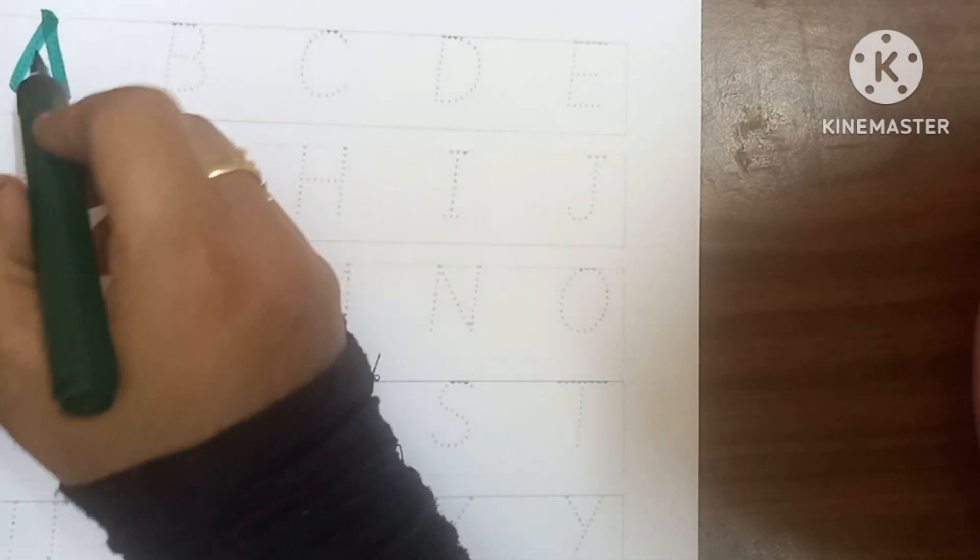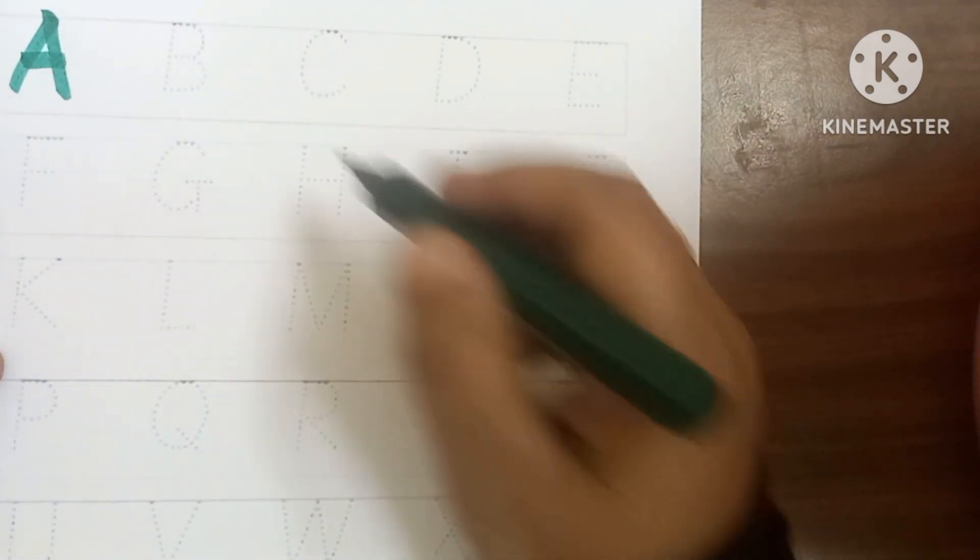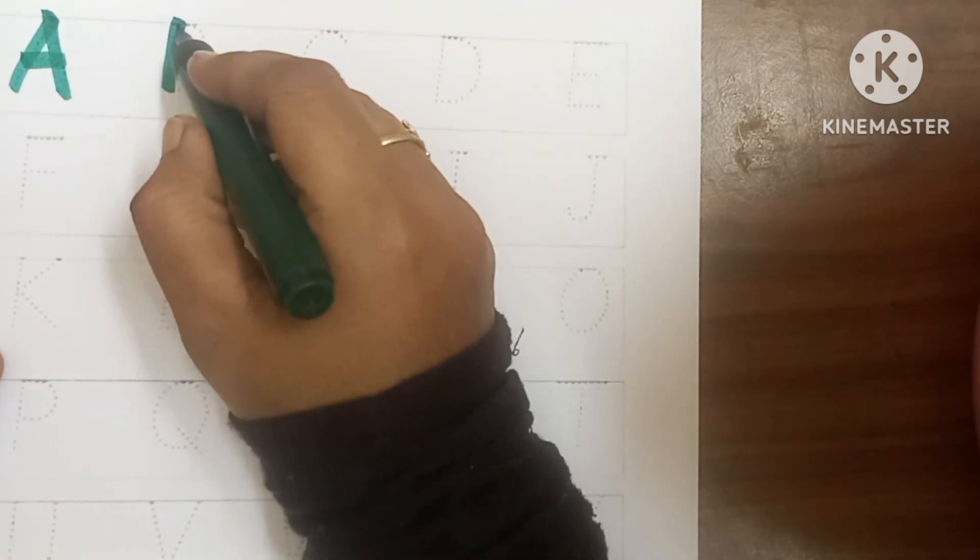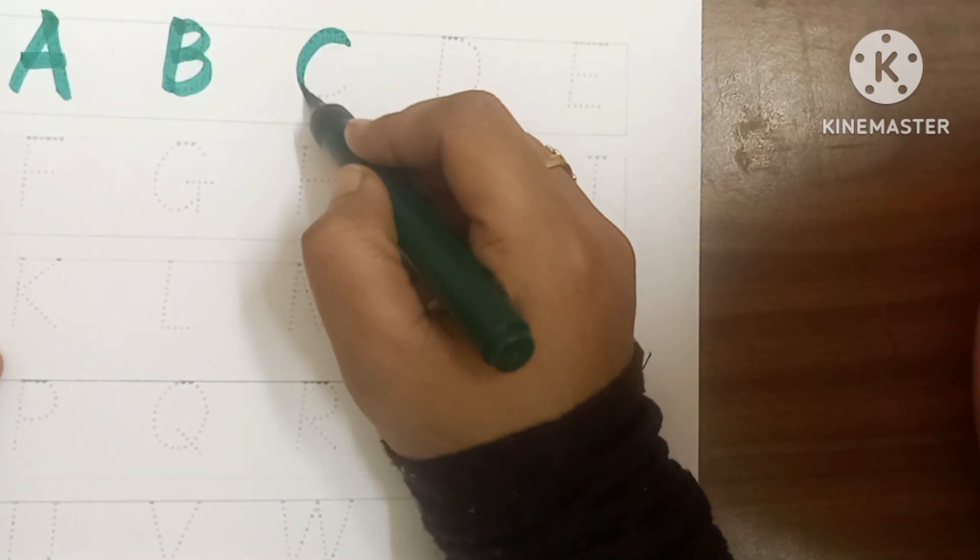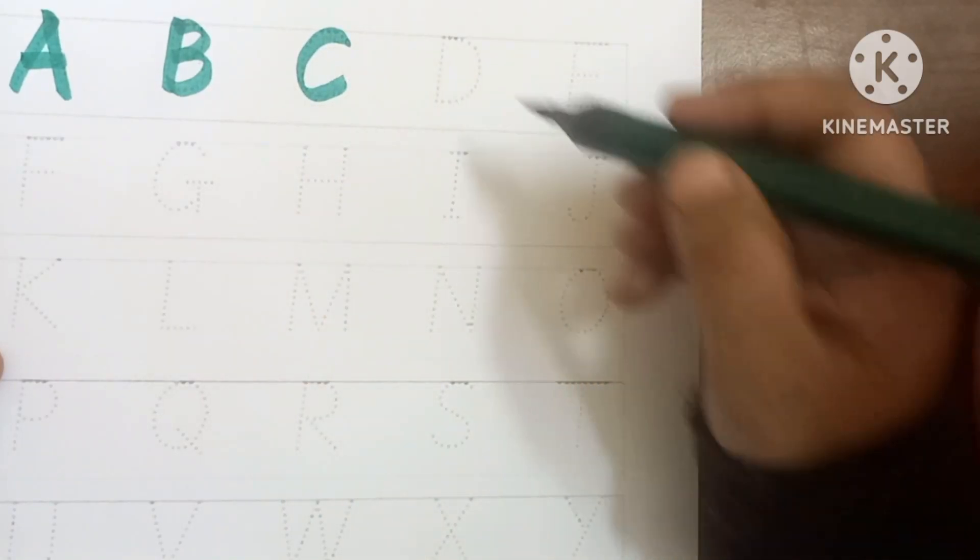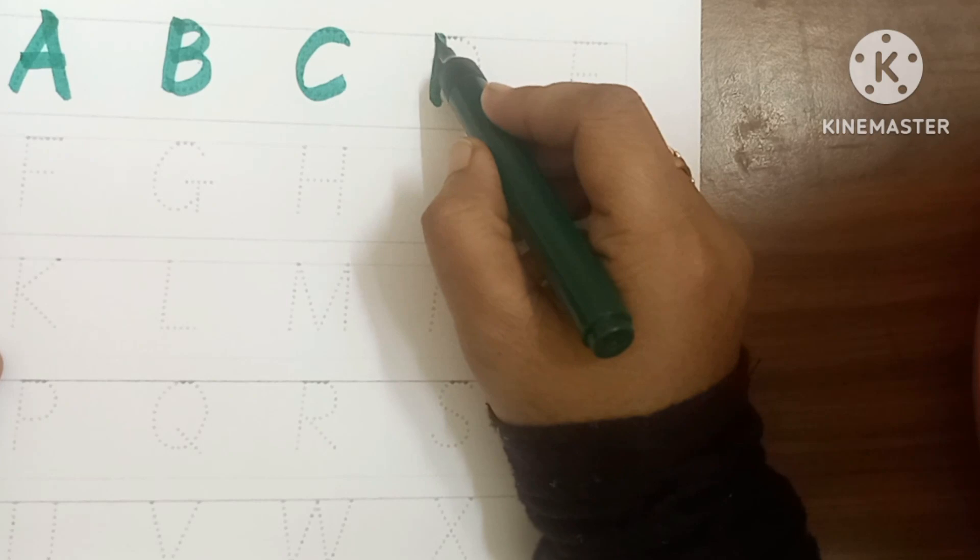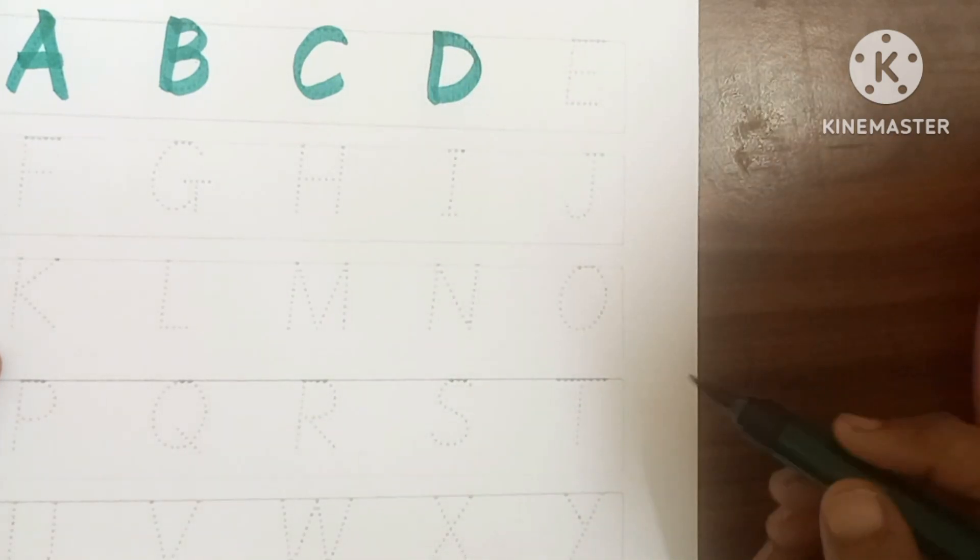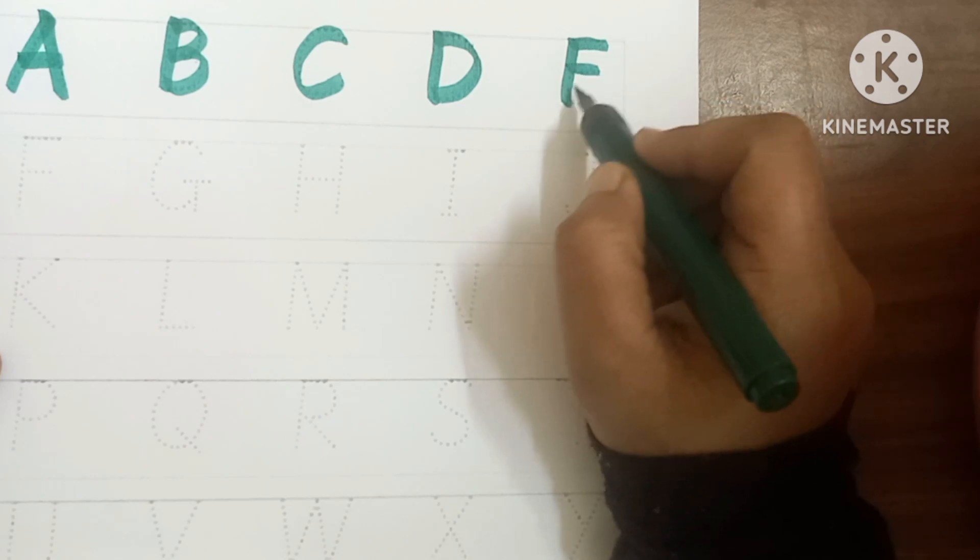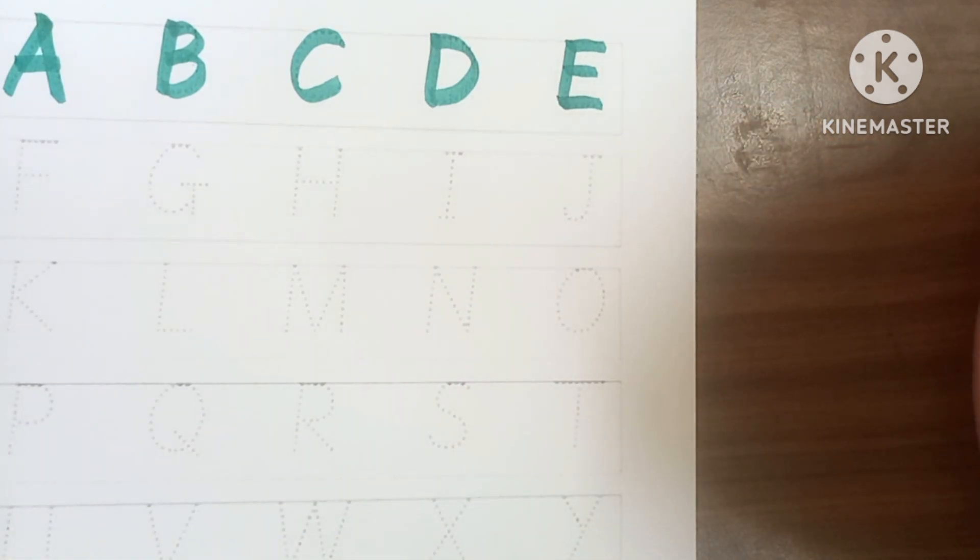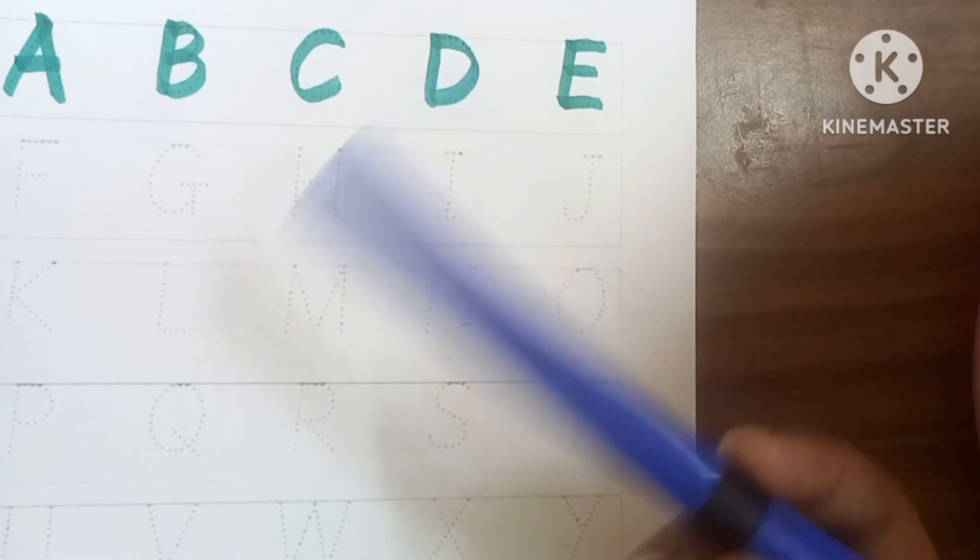A A for apple. B B for ball, C C for cat, D D for dog, E E for elephant.